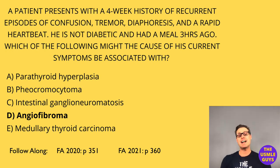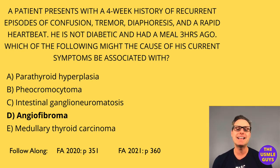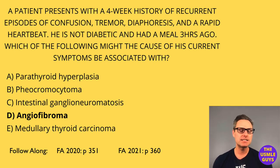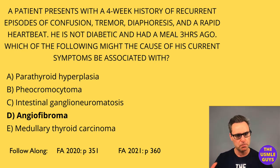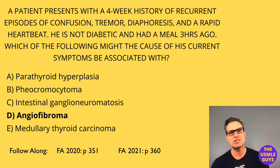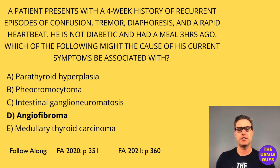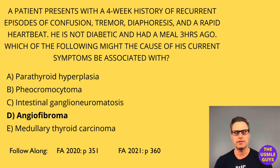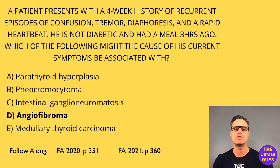The correct answer here is D, based on recognizing that the patient has an insulinoma — which is part of the MEN1 group — and knowing that MEN1 can also be linked to angiofibromas. MEN1 is associated with tumors of the pituitary, the pancreas, and the parathyroid, and is associated with mutations of the MEN1 gene found on chromosome 11.